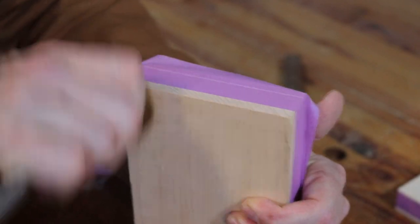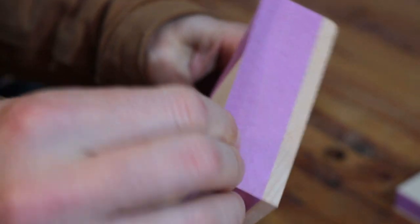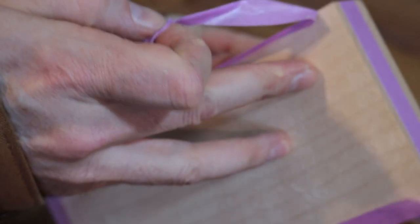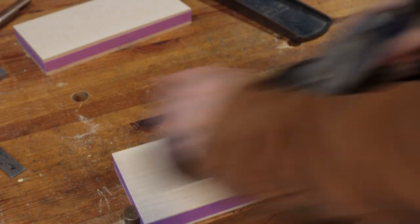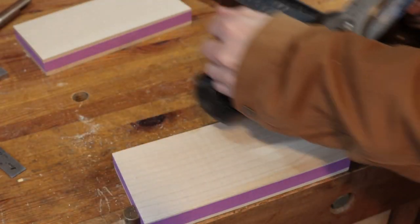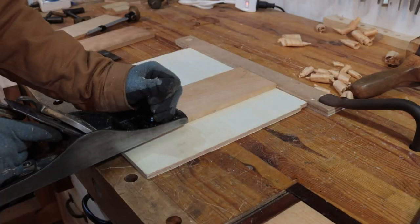You've just seen me cut and plane the rough maple that I'll be using for the fronts of the drawers. Now I want to make sure that these are all the same thickness. So I use some painters tape and my marking gauge to go around each of the pieces and then I plane down to the tape. This ensures that all the fronts will be the same width.